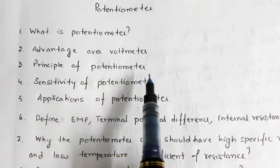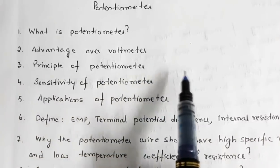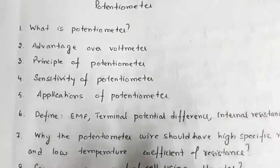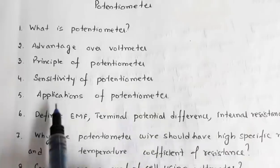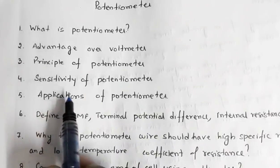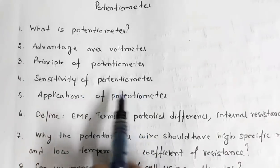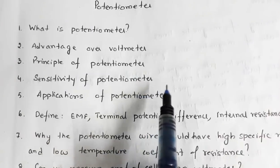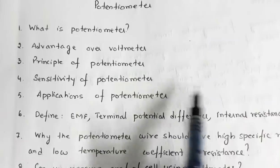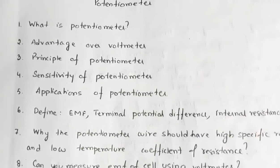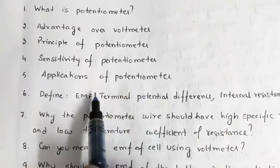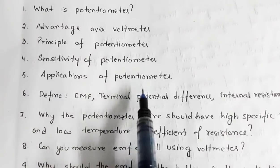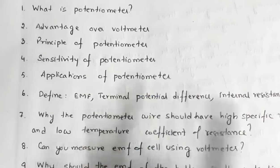What is the principle of a potentiometer? The potential drop across a given length of potentiometer wire is proportional to the length across which the balancing length is measured. What is the sensitivity of a potentiometer and how can you increase it? The sensitivity can be increased by increasing the length of the potentiometer wire. What are the applications of a potentiometer? Comparing the EMF of cells and determination of internal resistance of a cell.